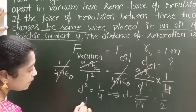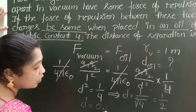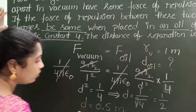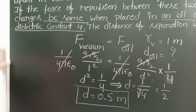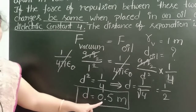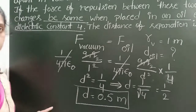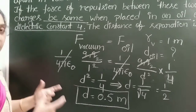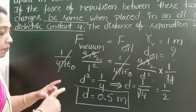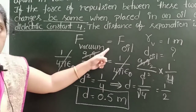The distance of separation between the two charges when placed in oil medium is equal to 0.5 meters. When compared to vacuum, in the oil medium the distance of separation decreases. That is why the force of repulsion in vacuum and in oil medium becomes the same.